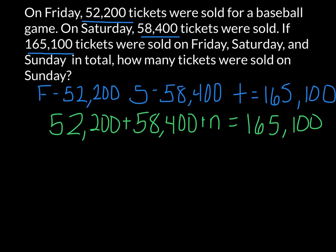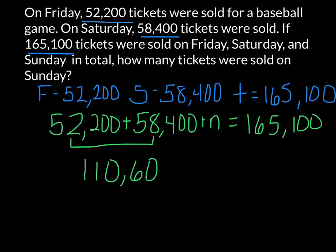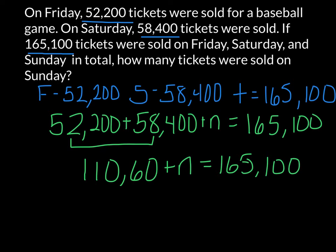We can add the two known values together and we get 110,600 plus n equals 165,100. We simplified that expression by adding together the two values we knew.